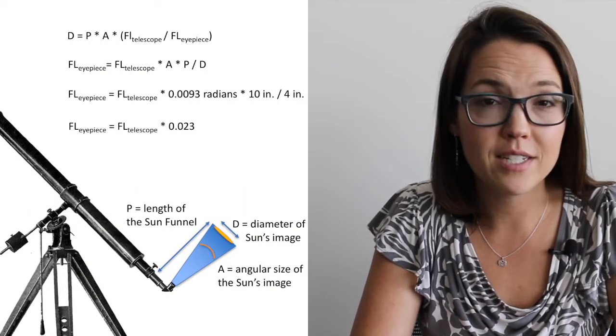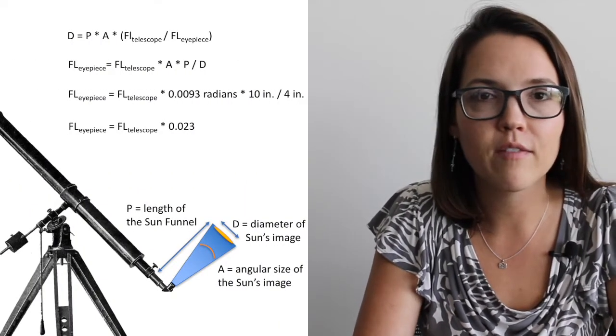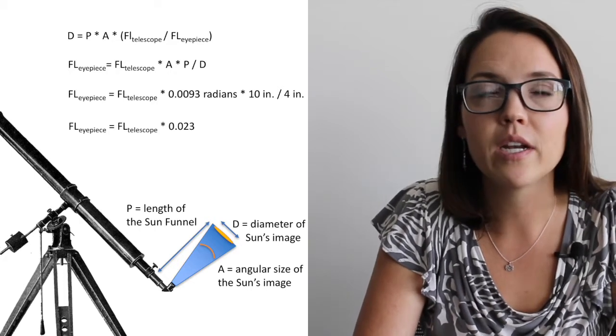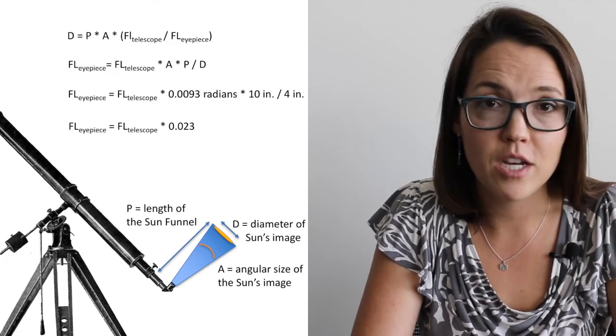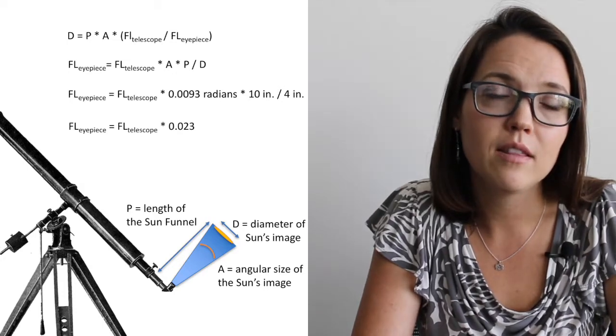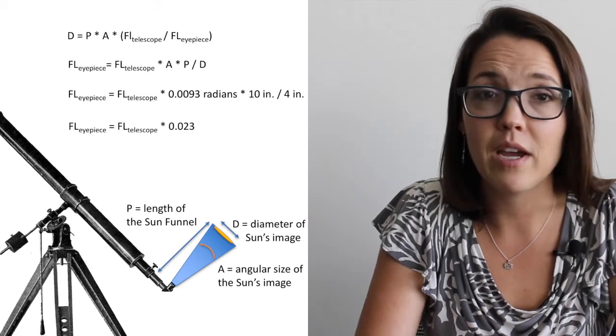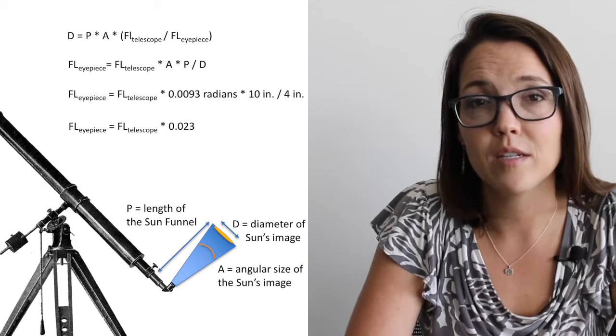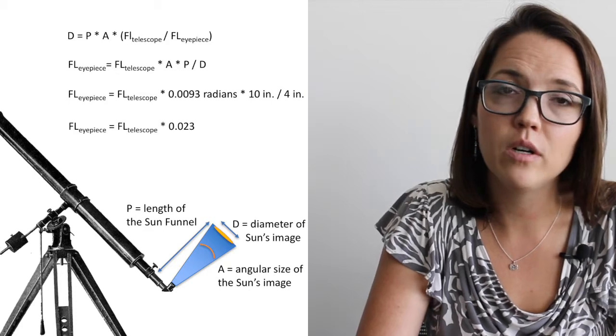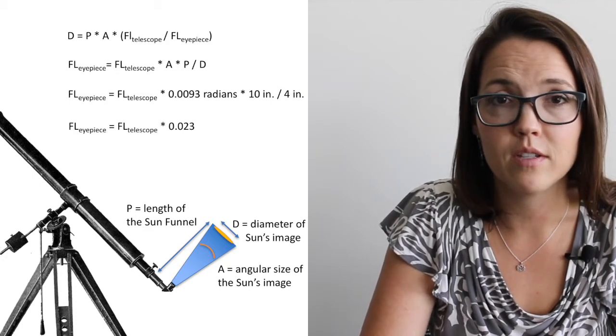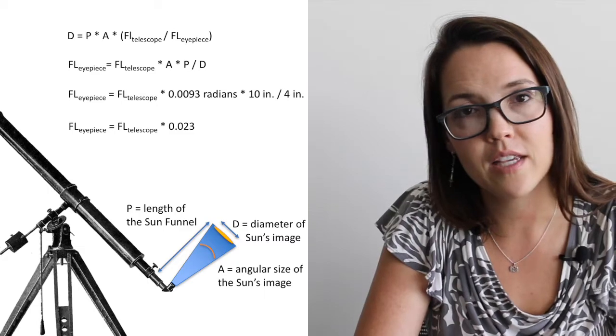You also need to find an eyepiece that has the correct focal length. So the focal length of the telescope combined with the focal length of the eyepiece and then the length of our Sun Funnel is going to give you the size of the projected image. And ideally you want the image of the Sun to basically fill the projecting area so that we can see as much detail as possible. An eyepiece with a shorter focal length will produce a larger image of the Sun and an eyepiece with the longer focal length is going to give you a smaller image of the Sun. We have listed here some good focal lengths for various focal lengths of your telescope.